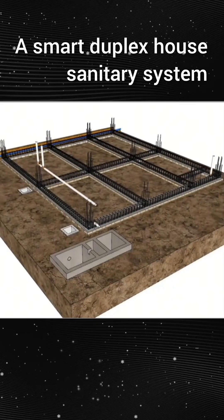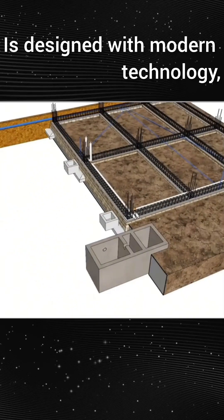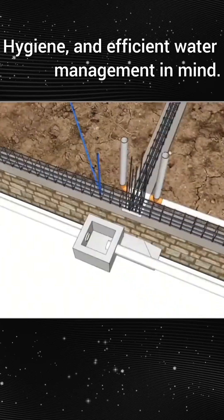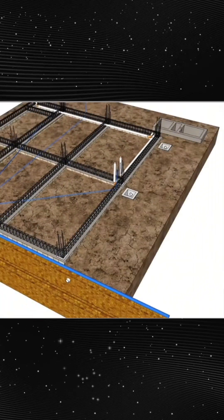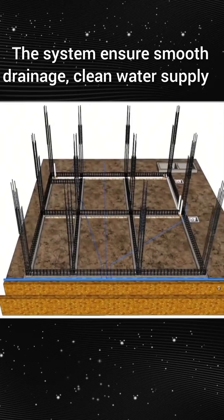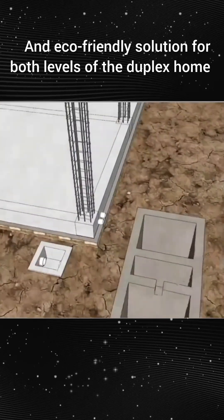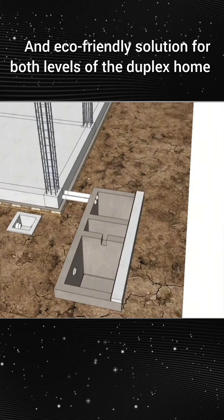A smart duplex house sanitary system is designed with modern technology, hygiene, and efficient water management in mind. The system ensures smooth drainage, clean water supply, and eco-friendly solutions for both levels of the duplex home.